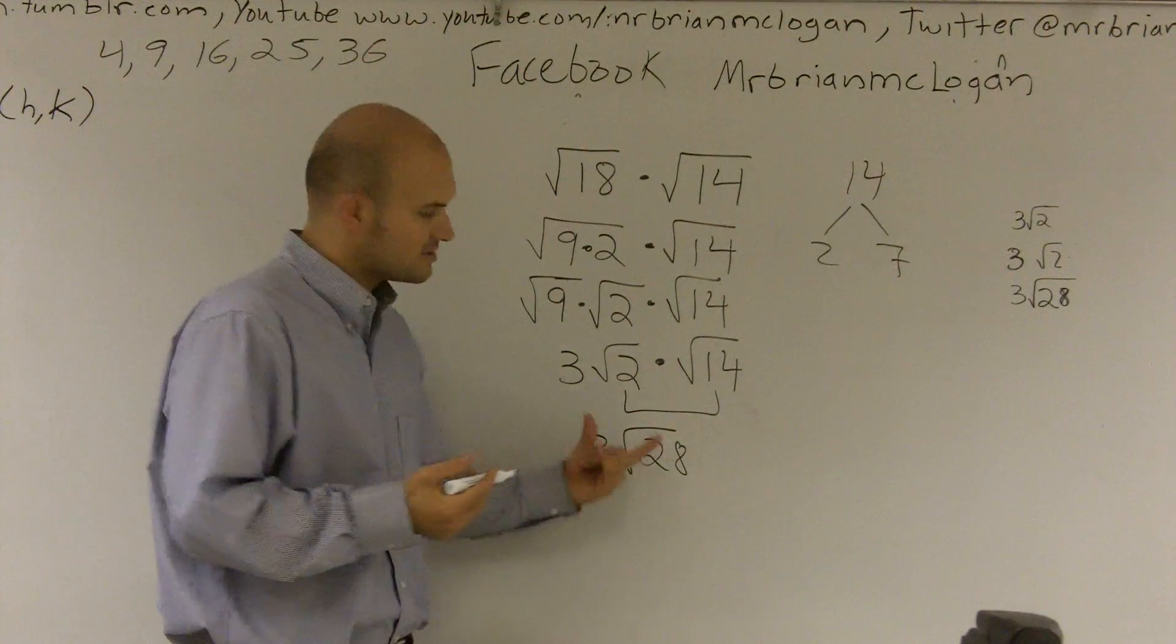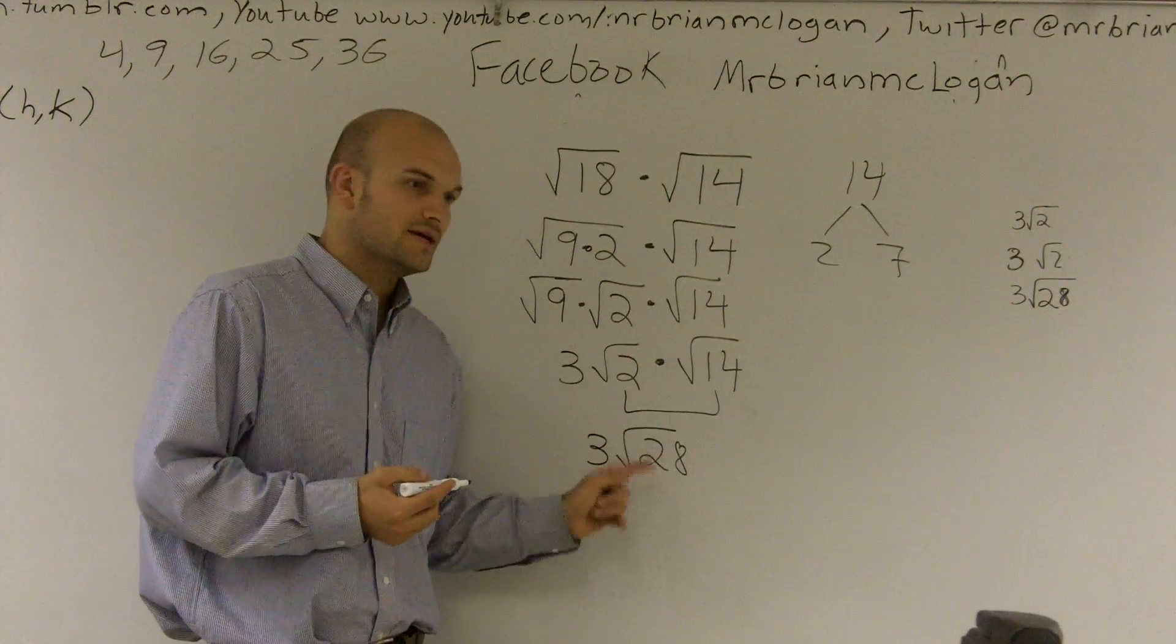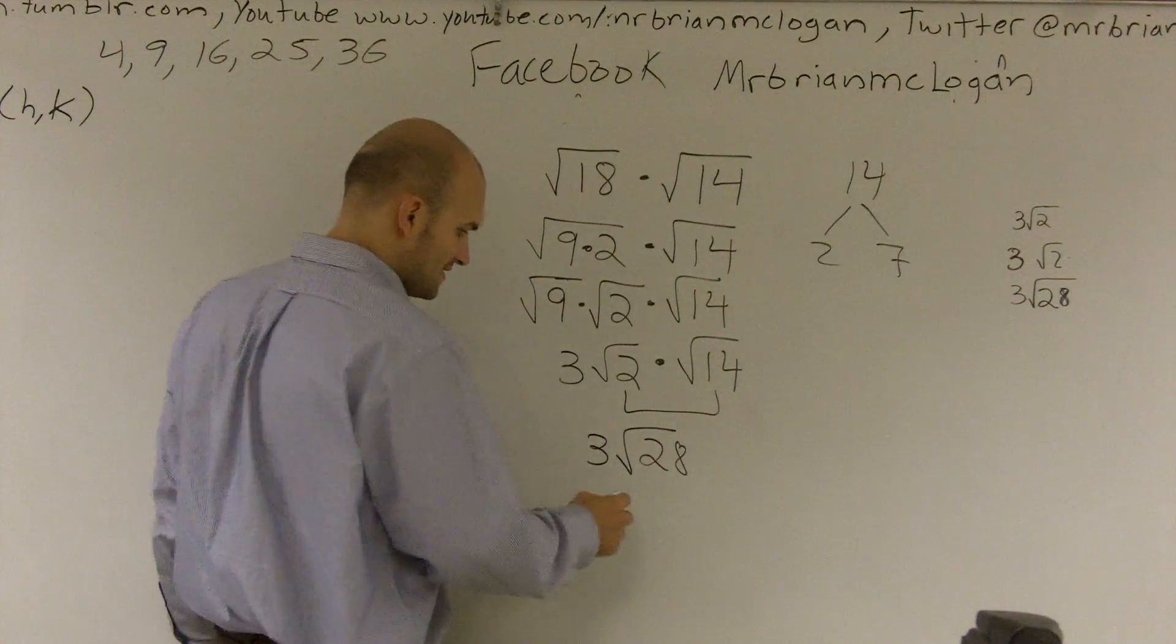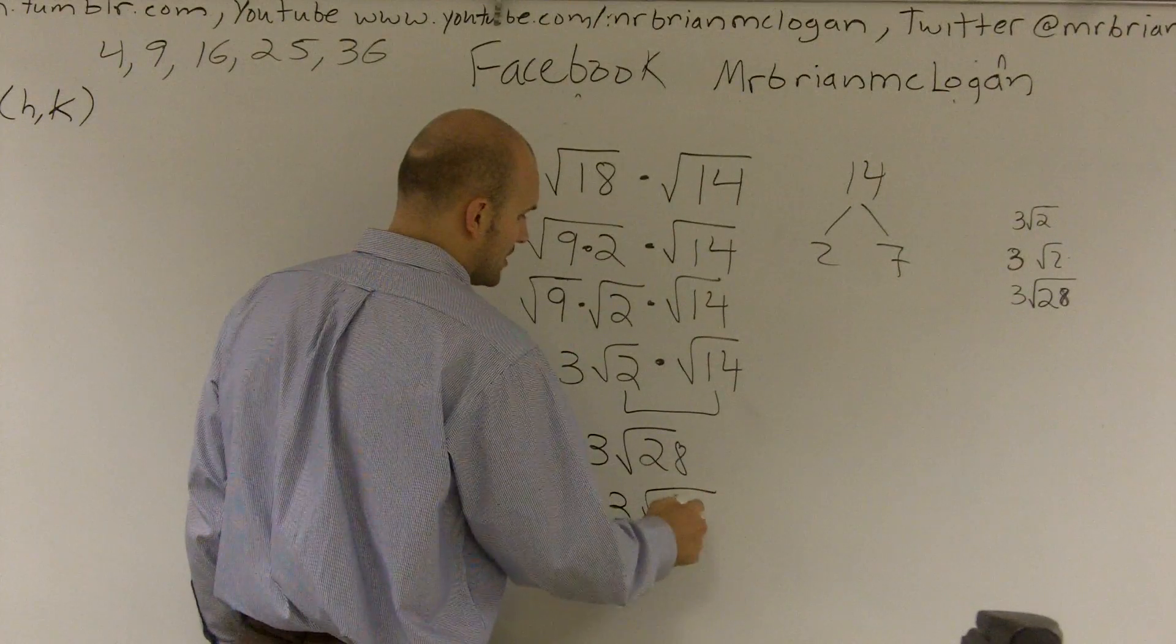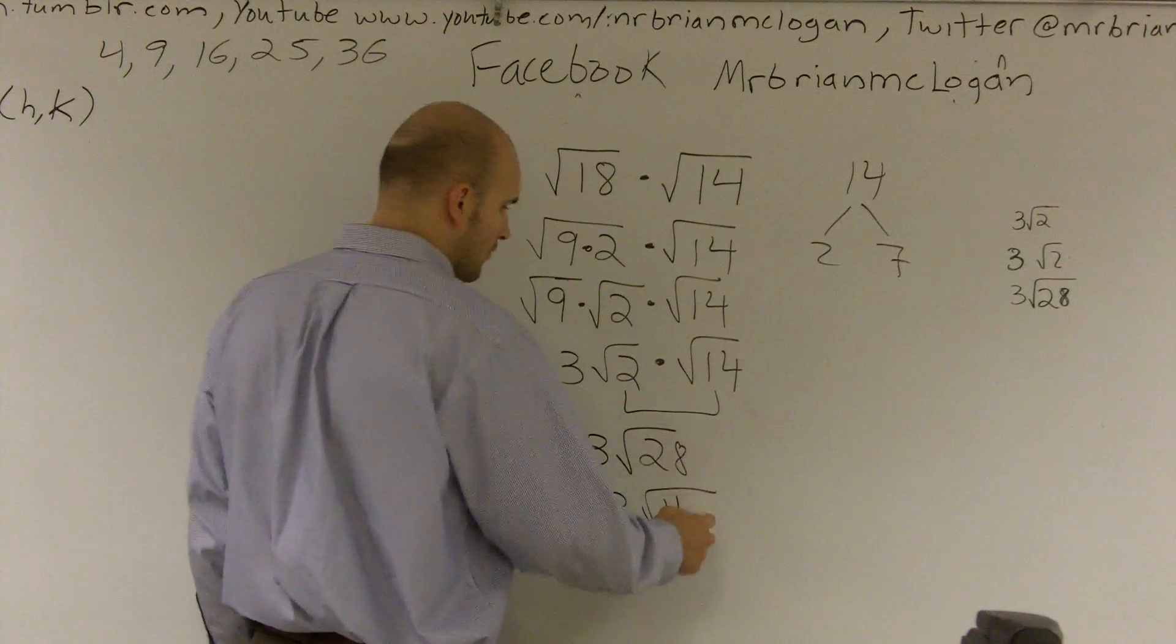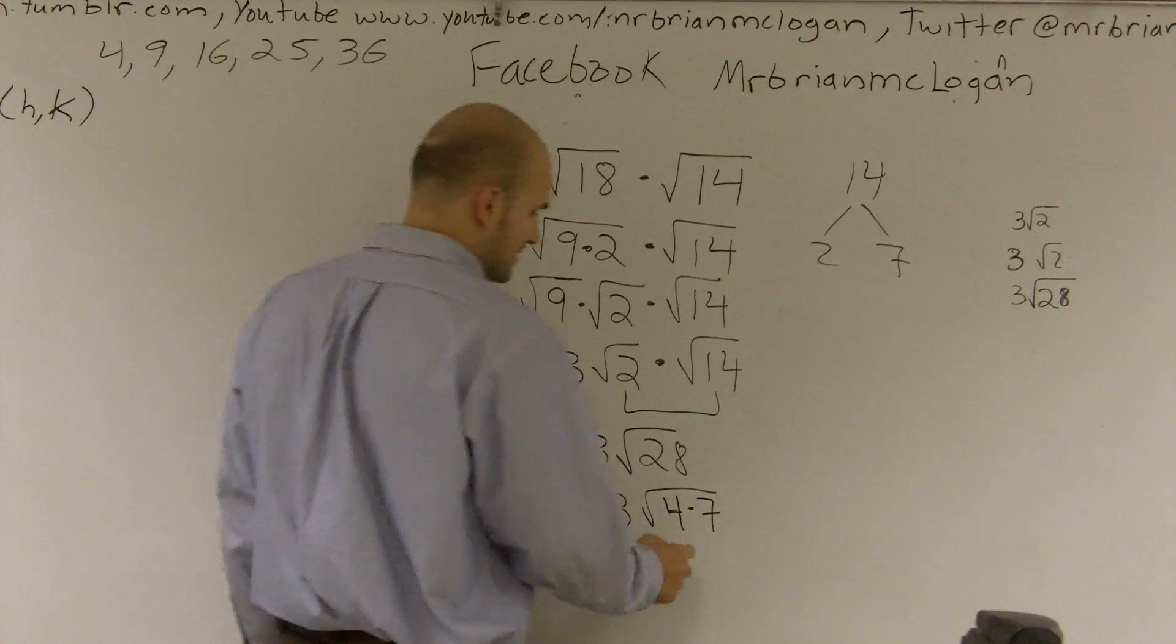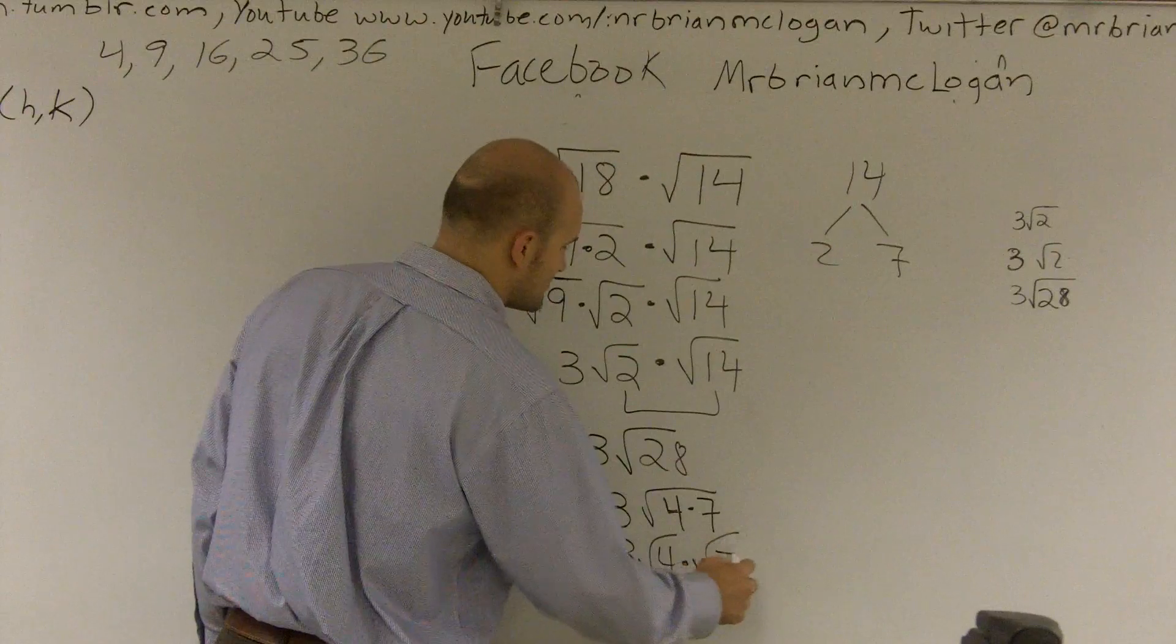And then again, last check, I go and see is there any square number that divides evenly into those? And you can say yes, I can actually take the 4 divides evenly in there. So I can say 4 times 7.